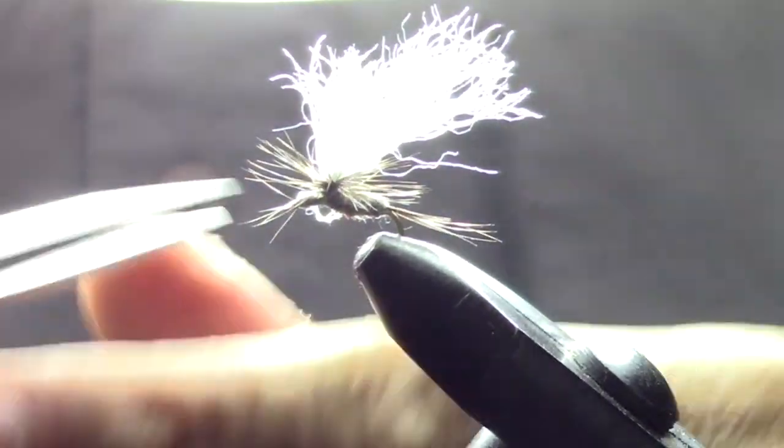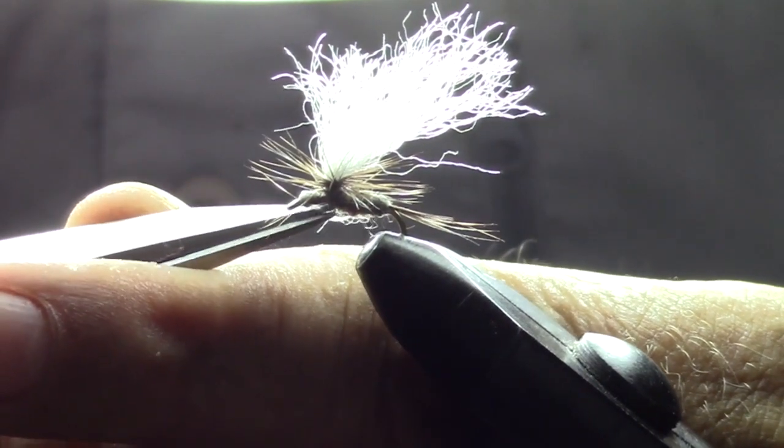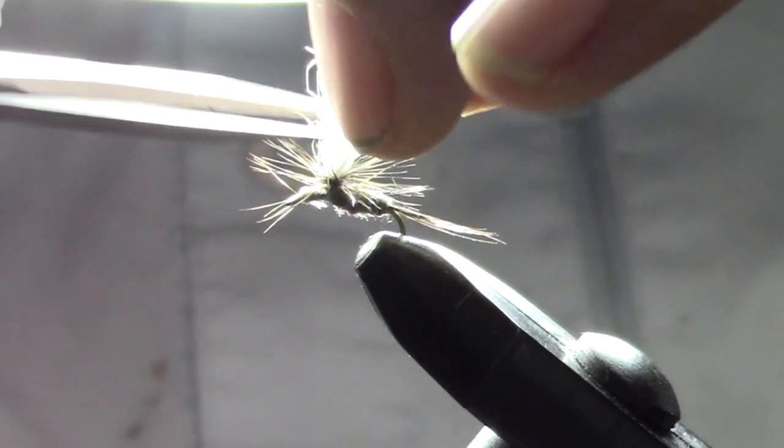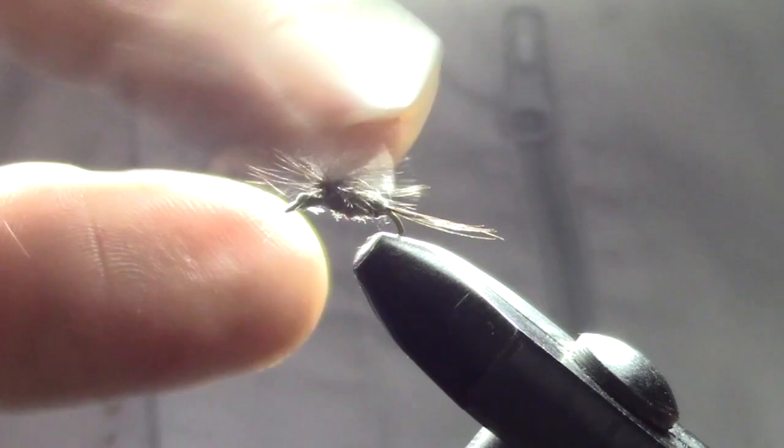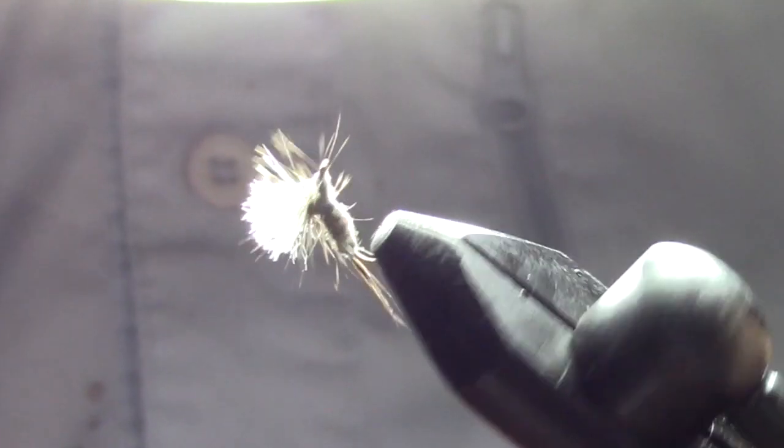Oh, I broke my thread. Well, just trim off the excess there. Pull the parachute post up, trim it to the desired height, clean it up a little bit, and there you go—parachute mayfly version.